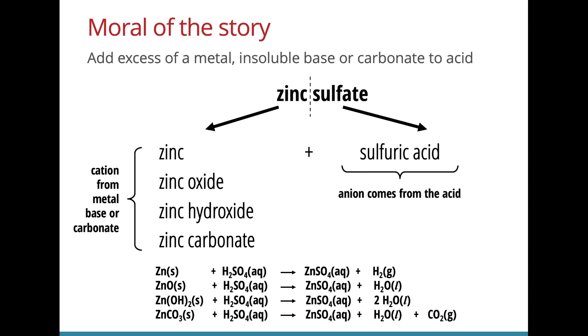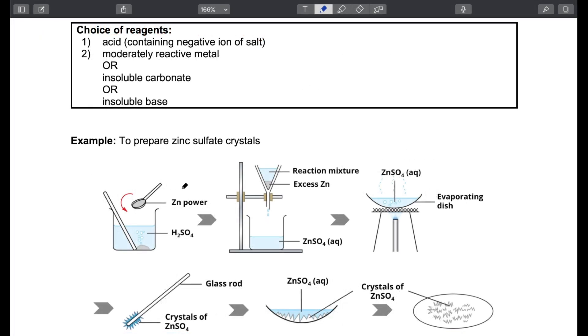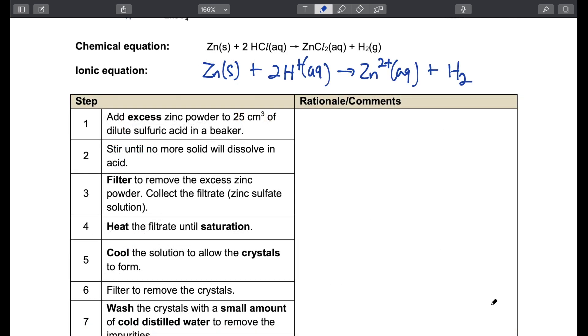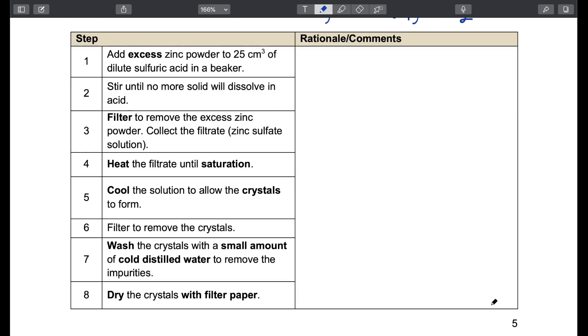Let's take a look at this example using zinc sulfate. We can make use of zinc, zinc oxide, zinc hydroxide or even zinc carbonate as the solid. It doesn't really matter. But we have to add an excess of this solid and then filter it off. So over to our notes. The graphic here shows the steps taken to prepare zinc sulfate crystals. We can start off using zinc, zinc oxide, zinc hydroxide or zinc carbonate. The acid chosen has to be sulfuric acid if we were to prepare zinc sulfate. However, if we would like to prepare zinc chloride instead, we have to use hydrochloric acid as the acid.